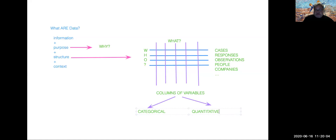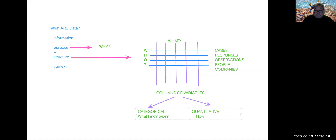What distinguishes categorical from quantitative variables is that categorical types describe kinds or types of information, whereas quantitative data describes amounts. And as such, they have different mathematical structures and different mathematical formats.